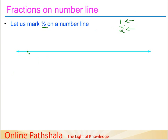We will mark a point on the line which we call 0, and then somewhere we take another point, which could be of any length — I've taken it randomly, it could be 1 centimeter, 1 meter, whatever — and we mark this as 1. Now this half lies somewhere between 0 and 1.